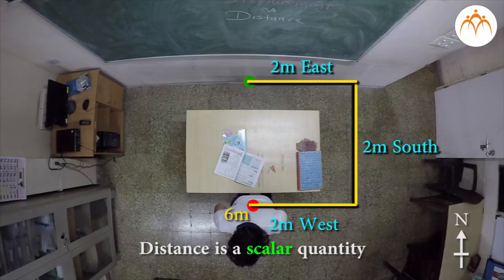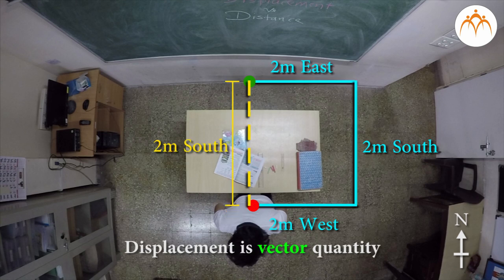Let's clarify by defining each of these words more precisely. Distance is a scalar measure of the interval between two locations measured along the actual path connecting them. Displacement is a vector measure of the interval between two locations measured along the shortest path connecting them.